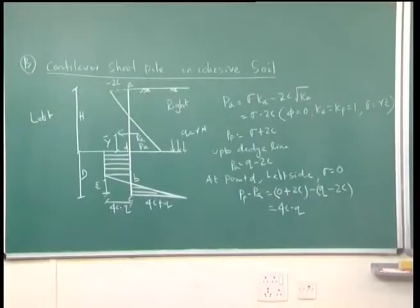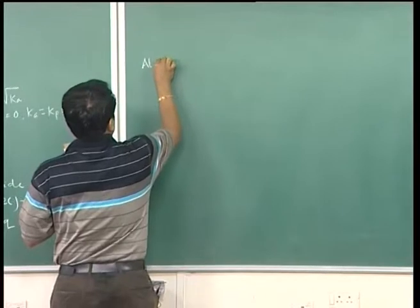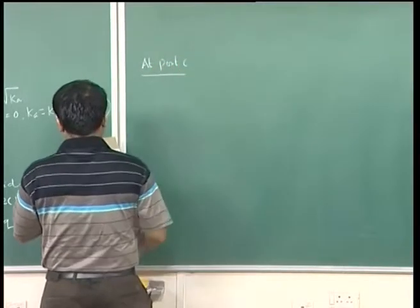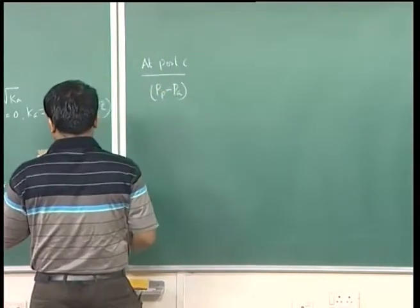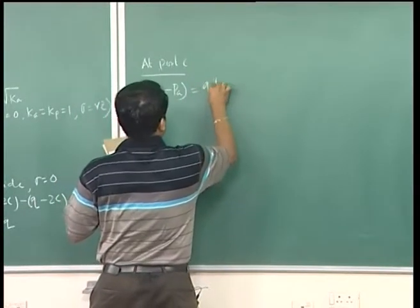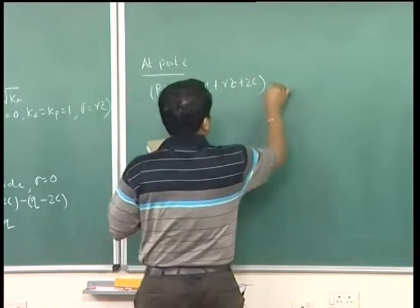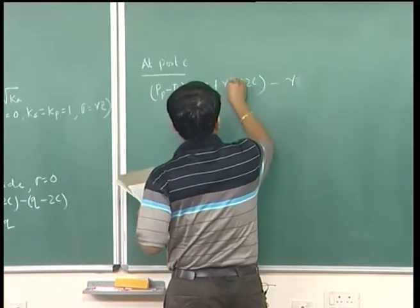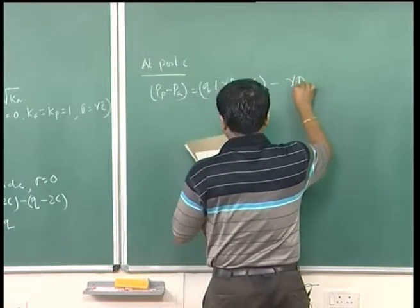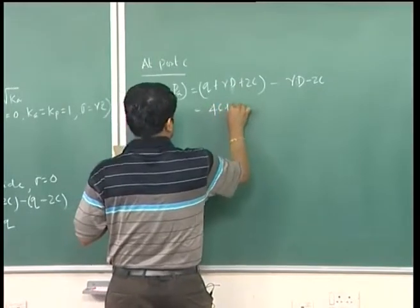On the right side, at point C, PP − PA = Q + γZ + 2C − γZ. Writing γD instead of Z for the embedded depth, minus (γD − 2C), which simplifies to 4C + Q.